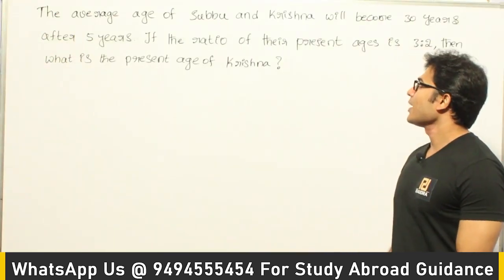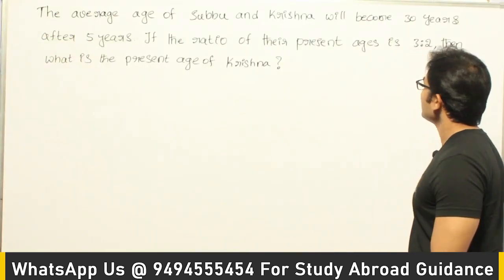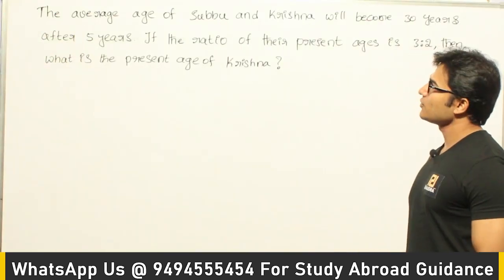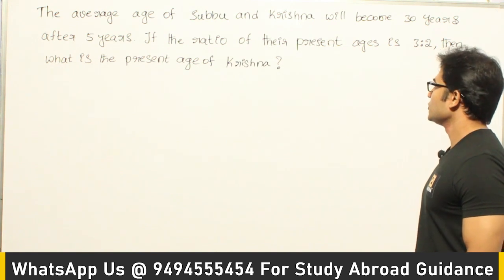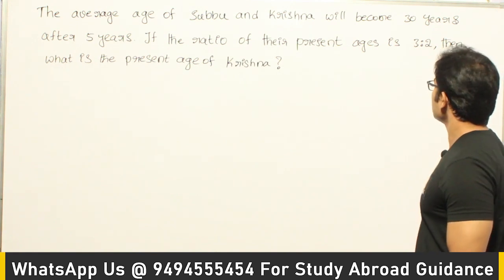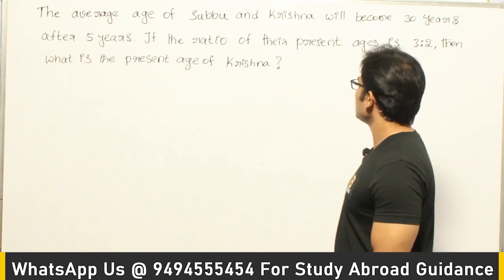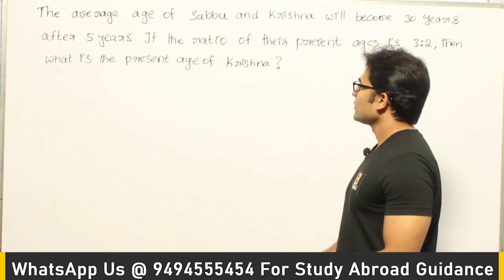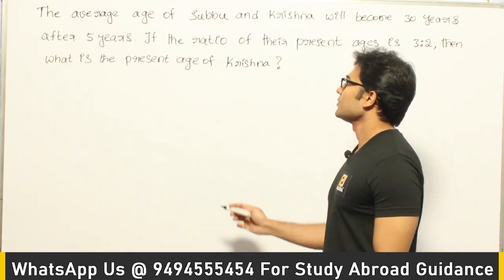The average age of Subbu and Krishna will become 30 years after 5 years. If the ratio of their present ages is 3 is to 2, then what is the present age of Krishna?